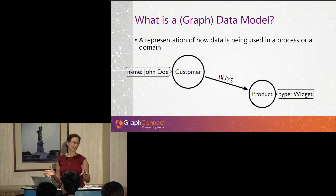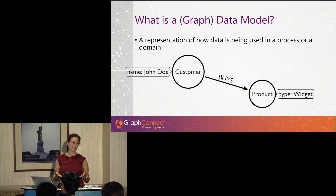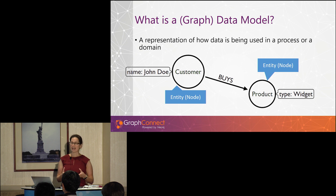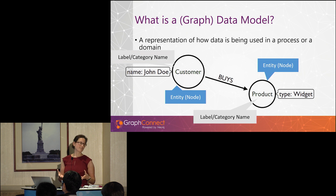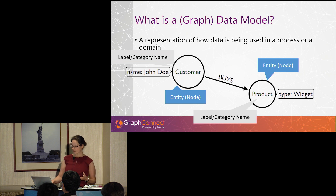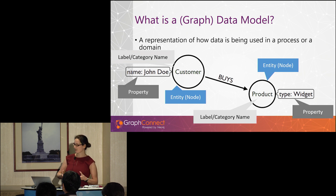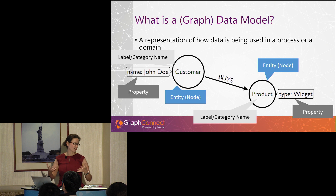A brief anatomy of a graph data model. We have the concept of an entity — this could be a business concept — and this business concept is what we call a node in Neo4j. Our nodes are going to have a label or category name, so this is a type. If we're thinking about business concepts, we could have a node of type Customer, we could have a node of type Product, and we're then going to attribute these nodes. A customer is going to have a name, a product is going to have a type, and so forth.